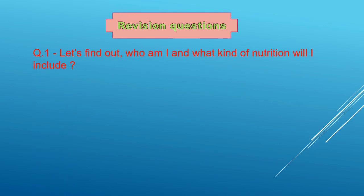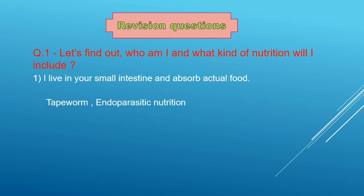Let's revise with revision questions. Question number 1 is Let's find out who am I and what kind of nutrition will I include? First is I live in your small intestine and absorb acute food. Yes. The answer is Tapeworm. And the type of nutrition is Endoparasitic nutrition. Tapeworm lives inside the body of other animals and obtain their food.